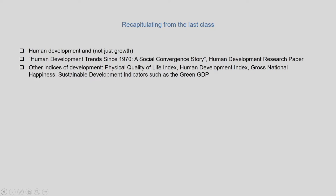In the last lecture, we also discussed competing indices of development such as the Physical Quality of Life Index, the Human Development Index, Gross National Happiness Index, and sustainable development indicators such as the Green GDP. These indices were developed to address the limitations of GDP per capita as the sole indicator of growth and development.